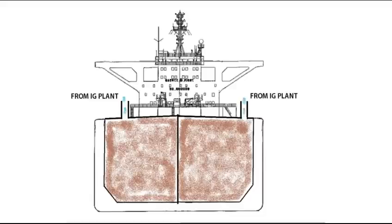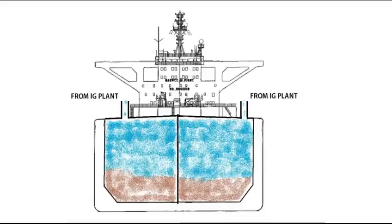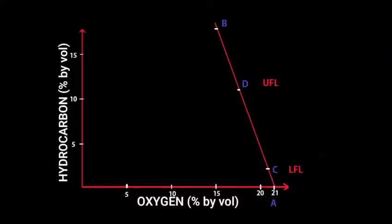Now, we introduce inert gas to the tank, that is we carry out inerting. As the inert gas content increases, the flammable mixture changes. The UFL and LFL narrows down to converge at a point F when inert gas is added.